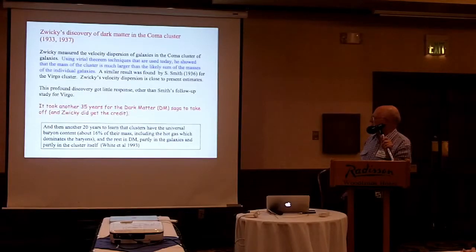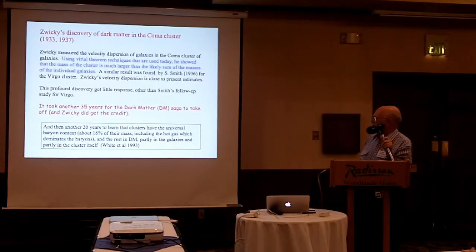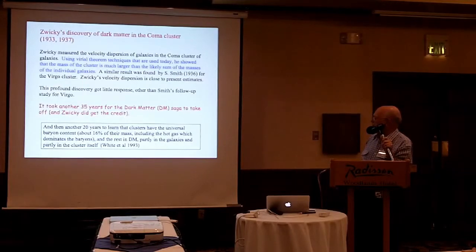Then it took another 20 years to learn that clusters have a universal baryon content of about 16% of their mass, including hot gas, which dominates the baryons, and the rest being galaxies. The cluster dark matter is partly in the galaxies and partly in the clusters.